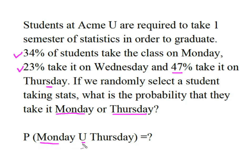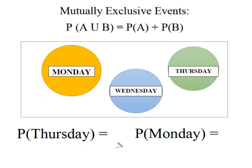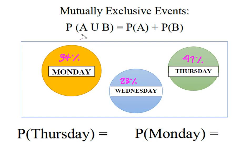This gives us Monday Union Thursday. What we have here is a case of mutually exclusive events. We have 34% who are taking the class on Monday, another 23% who are taking it on Wednesday, and 47% who are taking it Thursday. But since they only take one stats class and only take it one day a week, none of these groups have anything in common — they have no common members. So we're able to find it using simply the probability of A plus the probability of B.